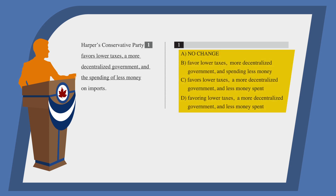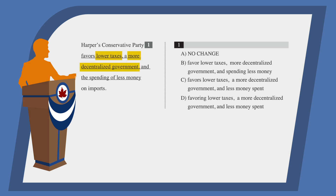Our answer choices are different ways in which the underlined portion of the sentence could be written. First, we need to decide if the underlined portion needs to be corrected. If it doesn't, we can choose answer choice A, no change. We have a list of items in our sentence, but we don't have parallel structure. The first two items on the list, lower taxes and a more decentralized government, establish a pattern that the third item doesn't match.